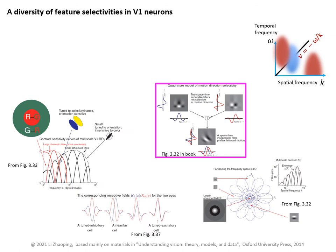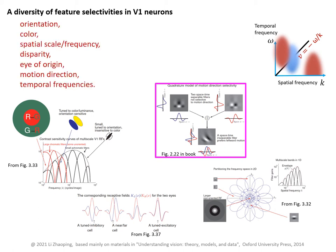V1 neurons can be tuned to multiple feature dimensions. We have seen that V1 neurons can be tuned to all kinds of features and feature conjunctions: orientation, color, spatial scale or spatial frequency, binocular disparity, eye of origin (left or right), motion direction, and temporal frequencies. They can be tuned to both color and orientation, both spatial and temporal frequencies, both orientation and disparity while preferring a particular eye, or tuned to a center-surround difference between one spatial region versus another.